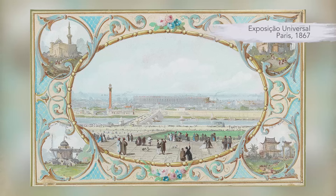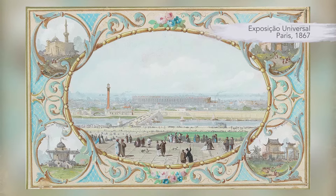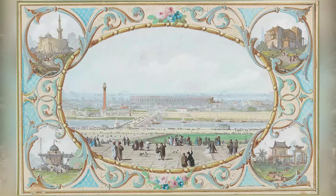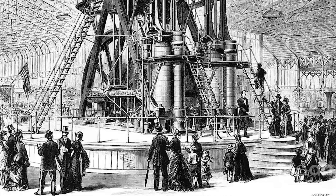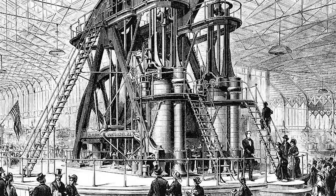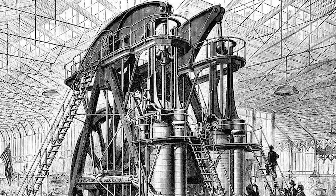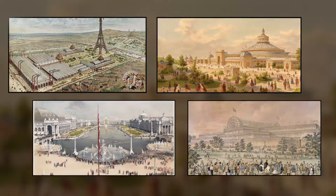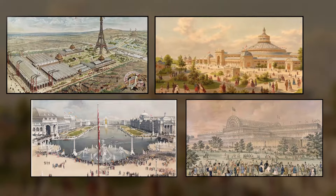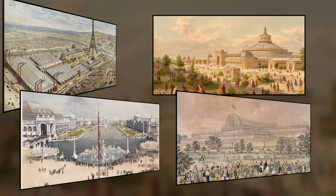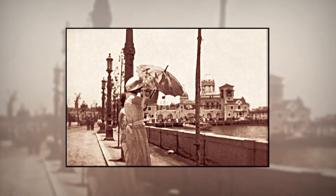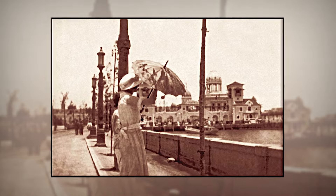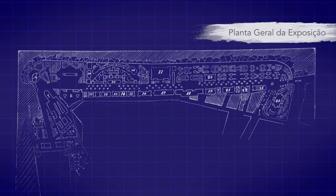Desde o século XIX, era comum ter exposições universais na Europa e nos Estados Unidos, com o objetivo de mostrar o progresso técnico-científico, a modernidade e o poder político e econômico dos países. O Brasil havia participado de várias delas, mas nunca havia sediado nenhuma. A Exposição Internacional de 1922 ocupou parte do centro do Rio de Janeiro.